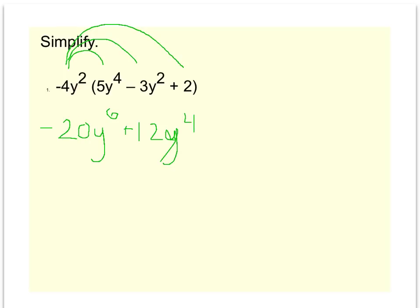And then lastly, when I do negative 4y squared times 2, the negative 4 will multiply with the 2 to give me minus 8, and then I just have y squared at the end. This answer is in standard form because I have an exponent of 6, 4, and 2, so from left to right it is going down.